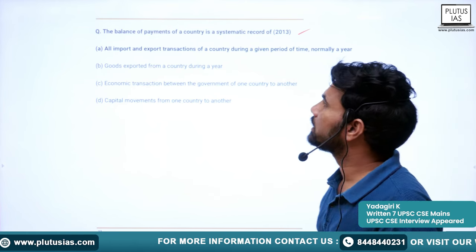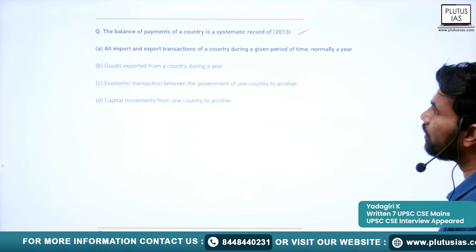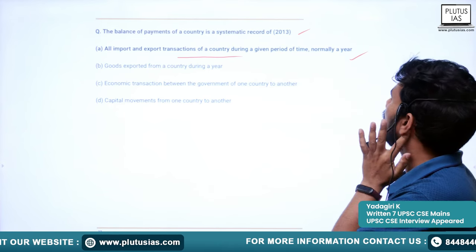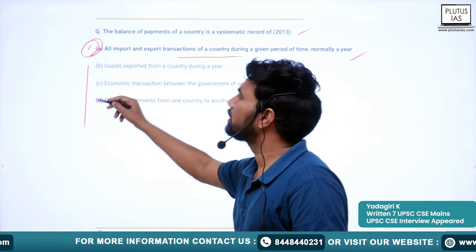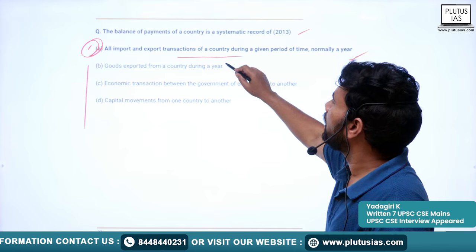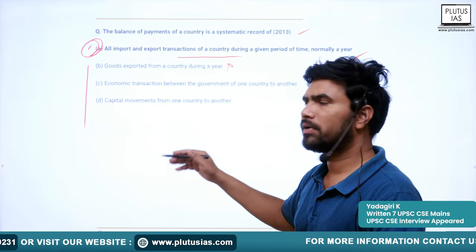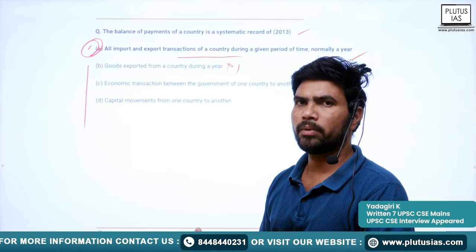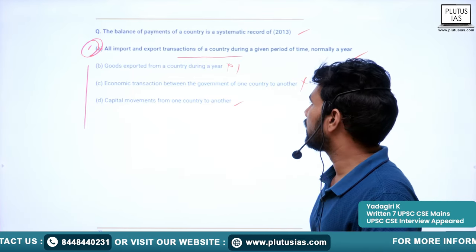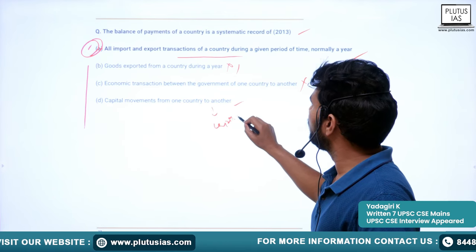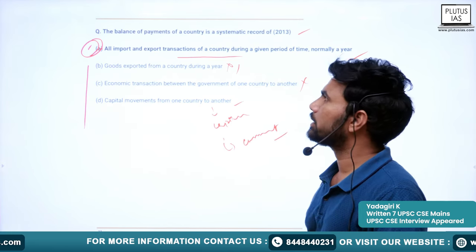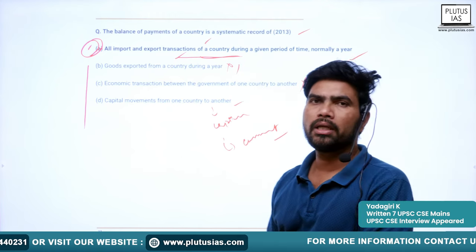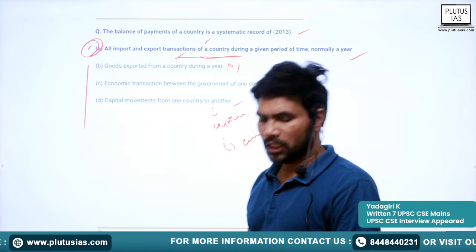Next question from 2013: The balance of payments of a country is a systematic record of — options include: all imports and export transactions of a country during a given period of time normally one year; goods exported from a country during a year; economic transactions between the government of one country to another; and capital movements from one country to another. The correct option is A — all import and export transactions of a country during a given period of time, normally a year. This is all about balance of payments for today. Thank you for joining the class. Have a good day.